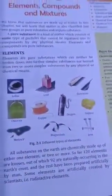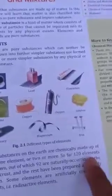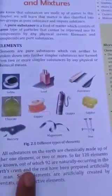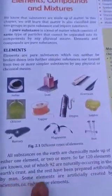All substances on the earth are chemically made up of either one element or two or more elements. As of now, 120 elements have been discovered, out of which 92 are naturally occurring and the rest have been prepared artificially. Some elements are artificially created by scientists — for example, the radioactive elements that are discovered or created by scientists.